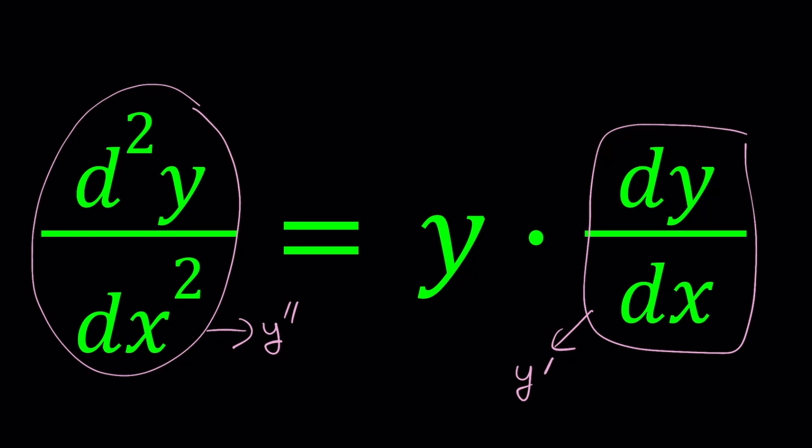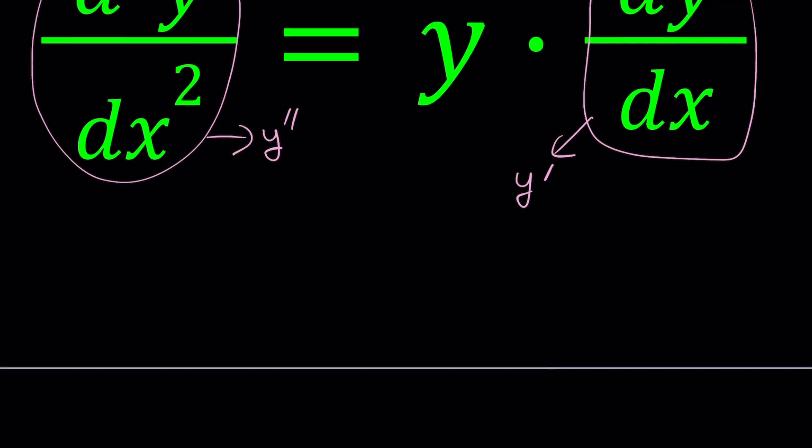So if we use that notation, obviously it's going to look a little better. So let's go ahead and write it that way. We have now y double prime equals y times y prime.